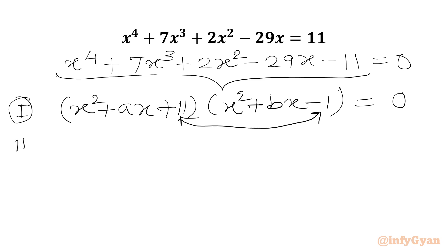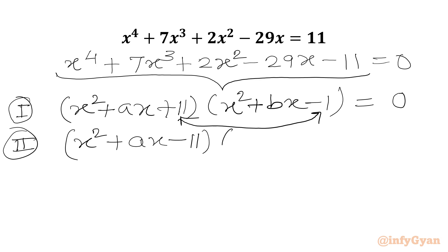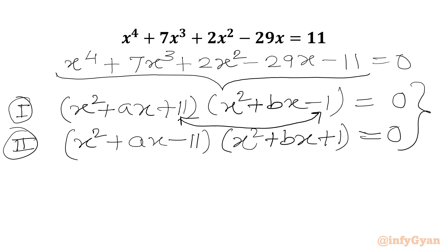For Case 2, we will consider (x² + ax - 11) multiplied with (x² + bx + 1). So out of these two cases, one case will be accepted and another case won't be accepted. So we have to find out our answer.